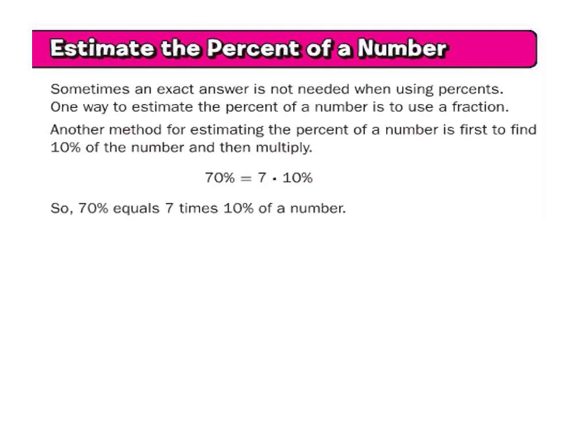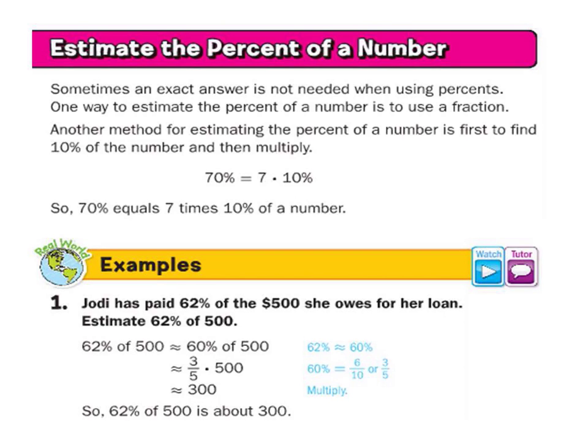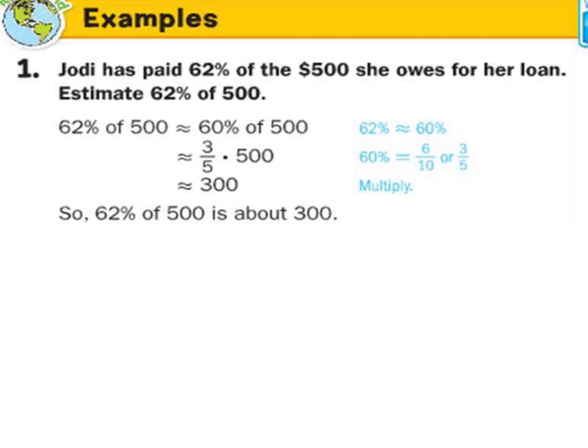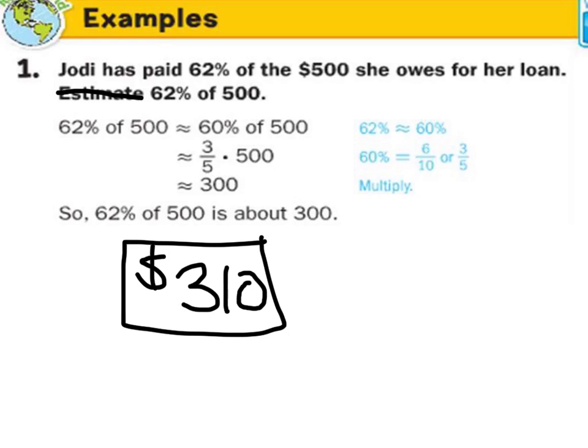So again, we see this, estimate the percent of a number. We're just going to take that estimate and cross her out. For example, on this first example they give in the book, Jody is paid 62% of the $500 she owes for her loan. 62% of $500. What is it? Well, it's 62. We're just going to move the decimal over twice, so you've got 0.62 times the 500. Bam, 310.